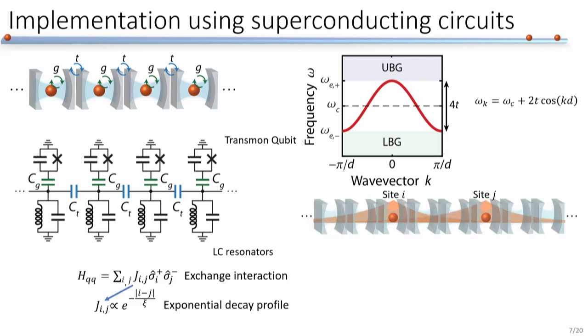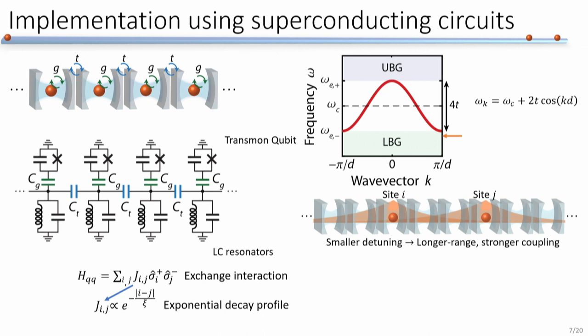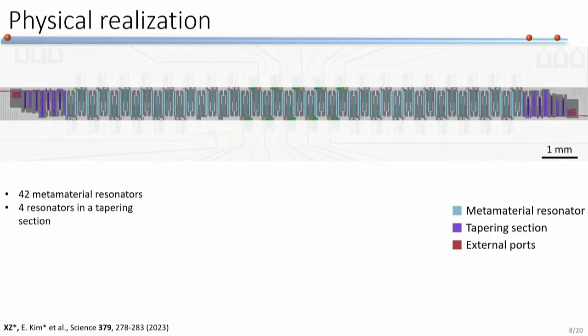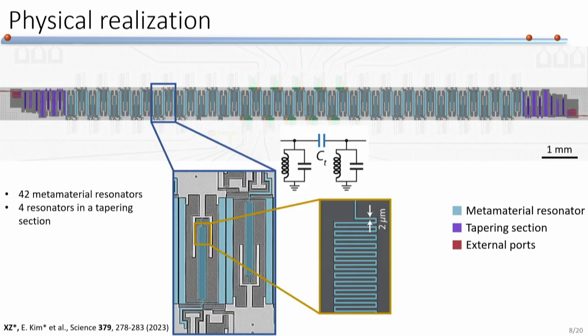This is an exchange-type interaction that follows the same spatial profile as the qubit-photon bound states — an exponential decay profile. The interaction range is also controlled by the qubit detuning relative to the band edge. With this detuning, we can control both the range and the strength of the coupling between different qubits. This forms the basis of having tunable coupling range and strength in the system.